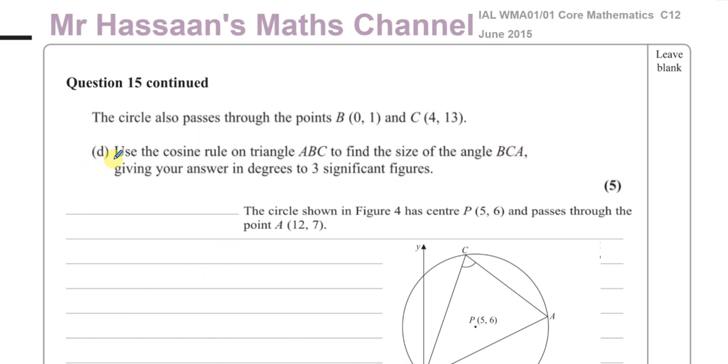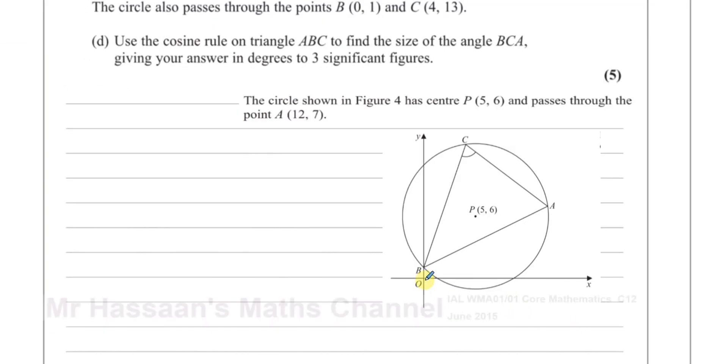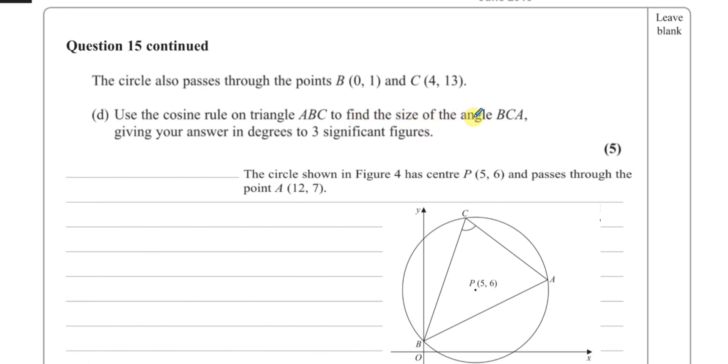So here it says, it tells us what to do actually. It says use the cosine rule on triangle ABC to find the size of angle BCA, which is this angle over here, which I'm going to call X. That's the angle we have to find. And they've told us to use the cosine rule and give the answer in degrees to three significant figures.